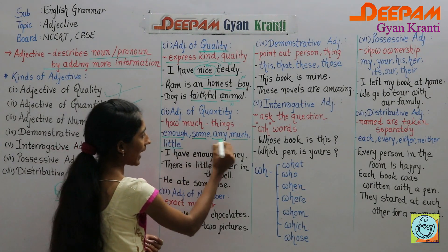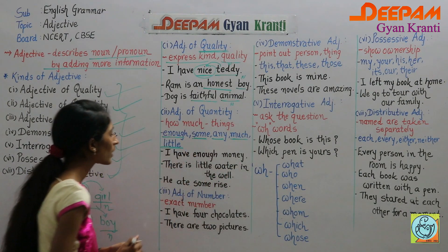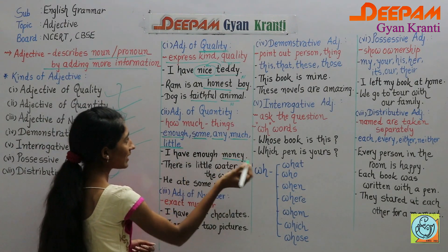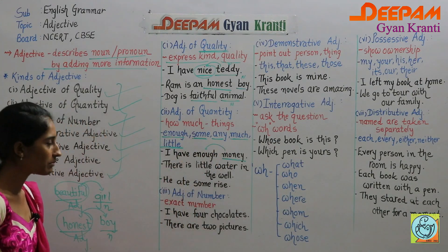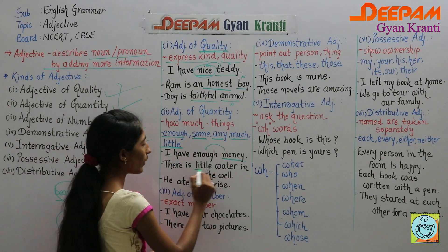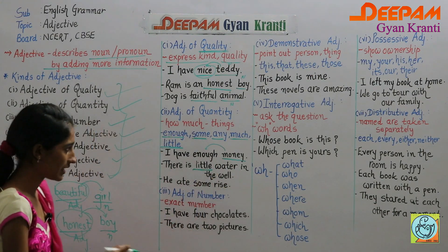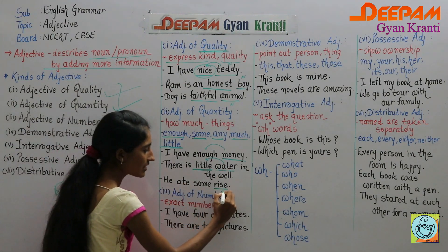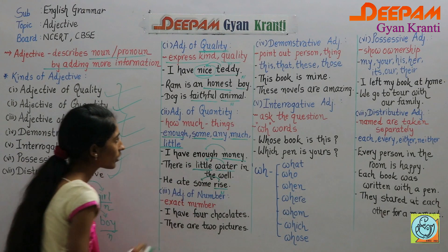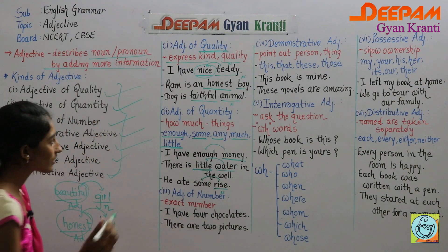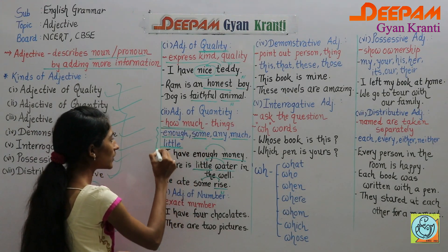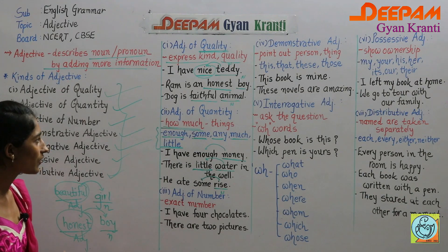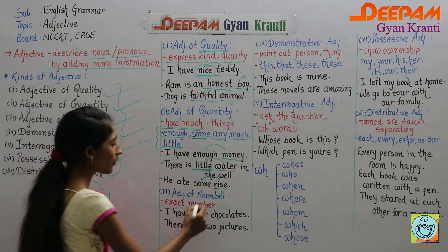Examples of adjective of quantity: 'I have enough money' — 'money' is the noun and 'enough' tells how much. 'There is a little water in the well' — 'little' shows how much water. 'He ate some rice' — 'some' tells how much rice. So adjective of quantity shows how much of something there is, using keywords: enough, some, any, much, and little.